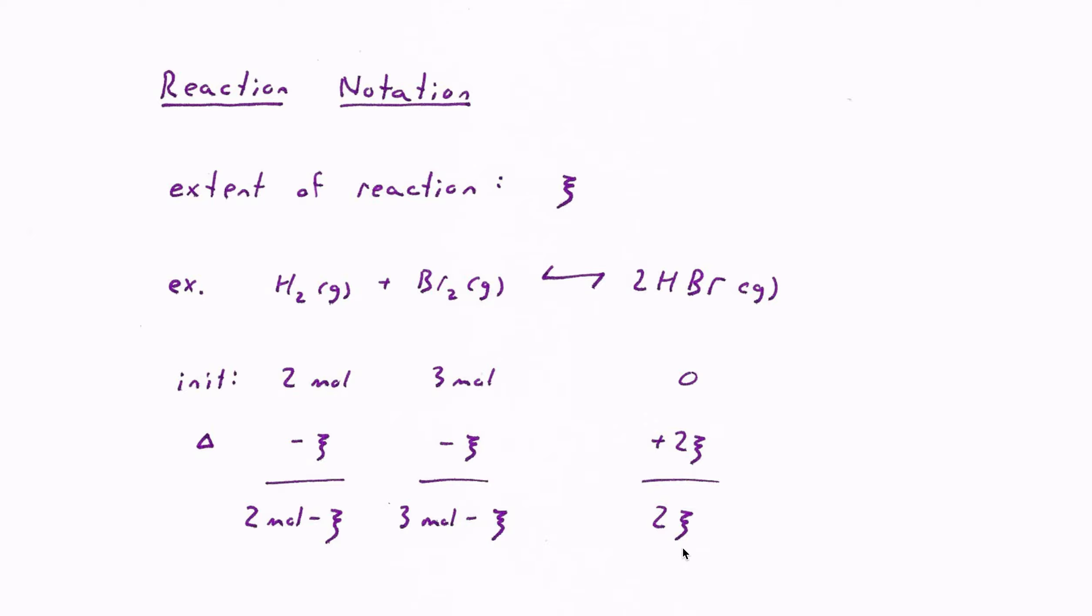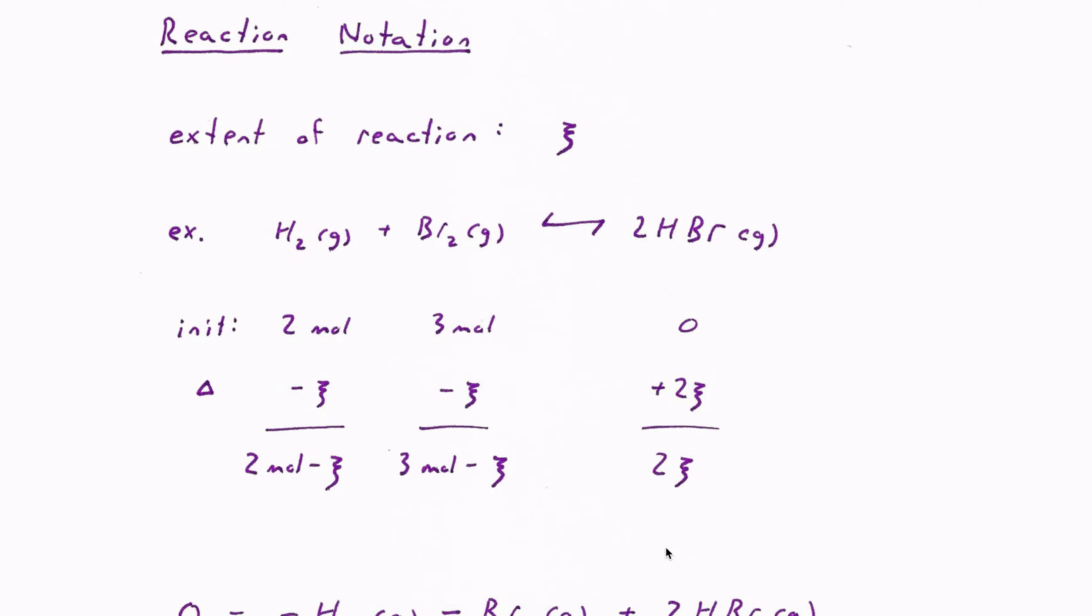So notice here that the stoichiometric coefficients in the reaction, such as the two in front of HBr, show up in this total amount of reactants and products.